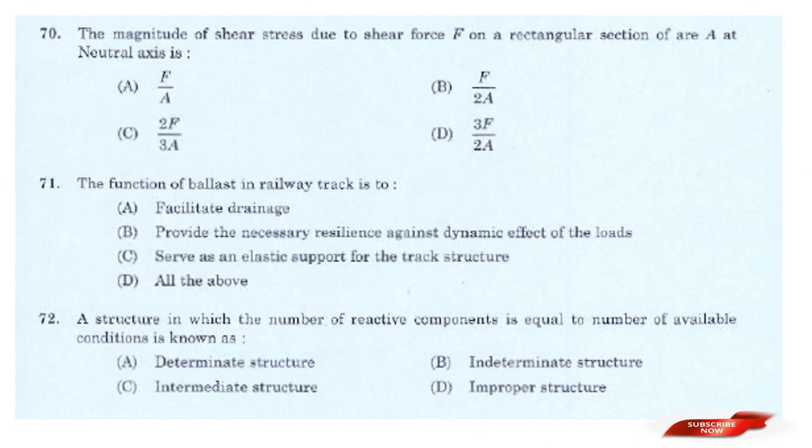Question: The magnitude of shear stress due to shear force F on a rectangular section of area A at the neutral axis is? Options: F/A; F/2A; 2F/3A; 3F/2A. Answer: Option D — 3F/2A.